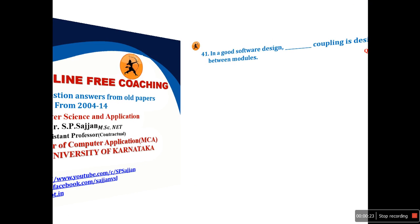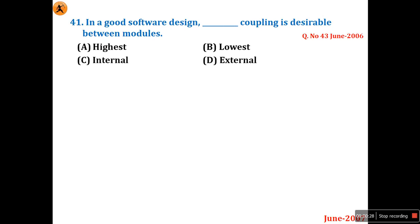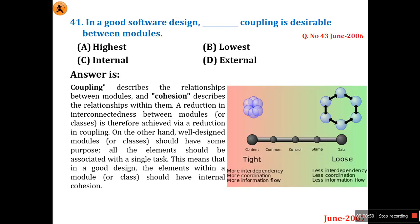Question number 41: In a good software design, low coupling is desirable between the modules. I have already discussed coupling and cohesion in question number 43 of June 2006 in detail. In software engineering, low coupling and high cohesion is required to develop a good software design.